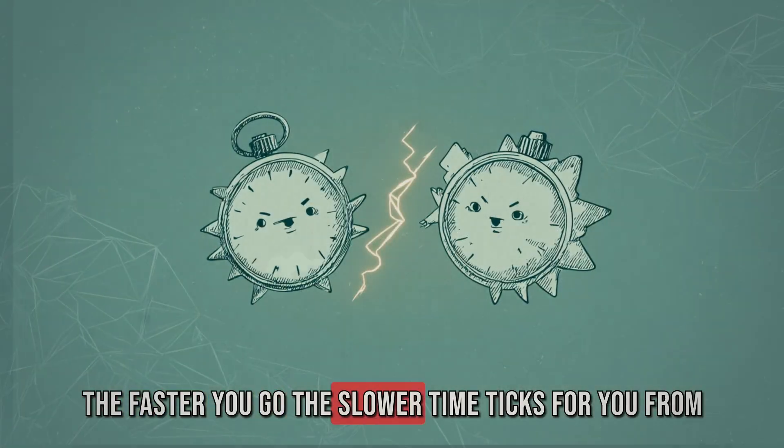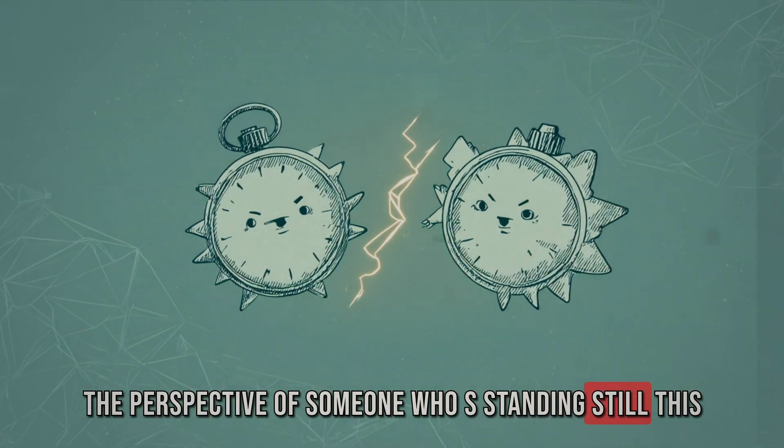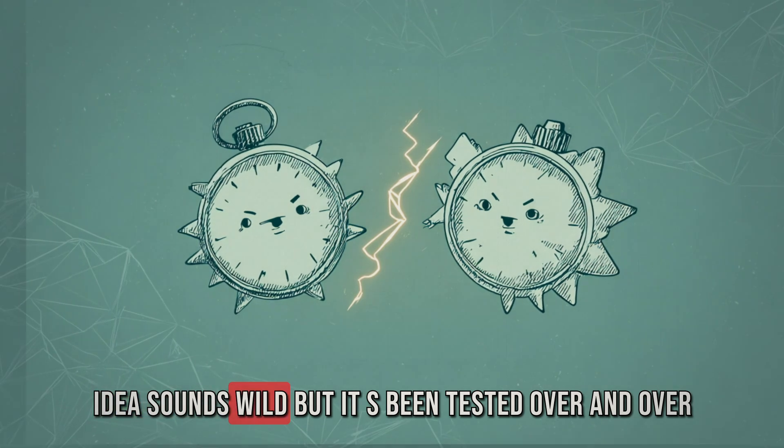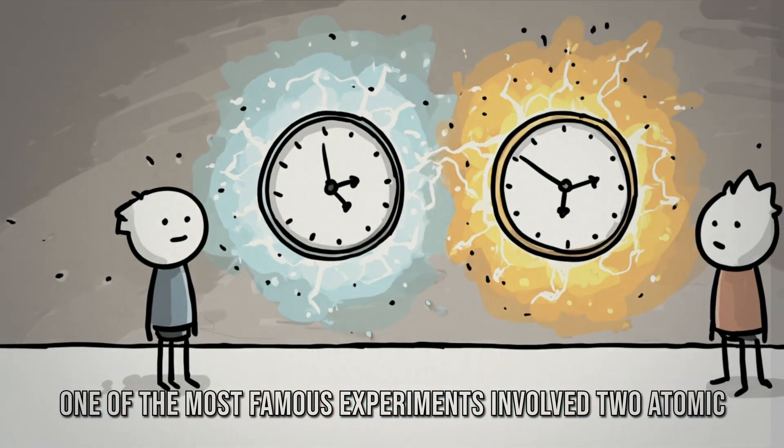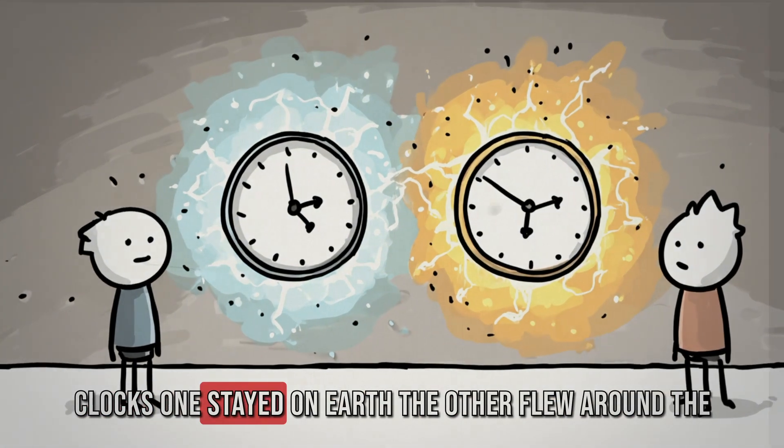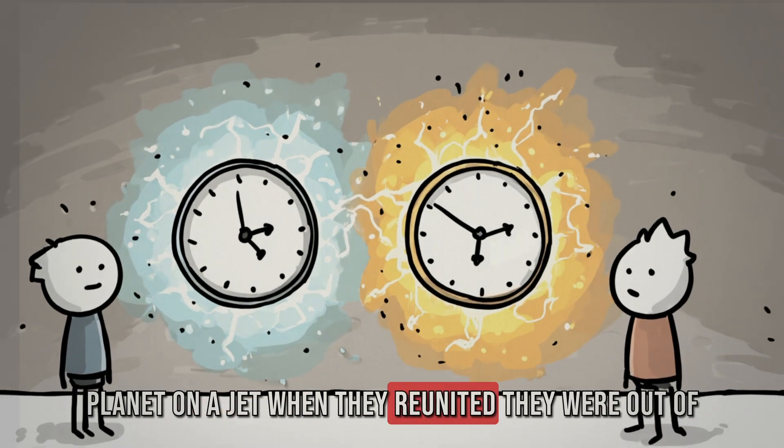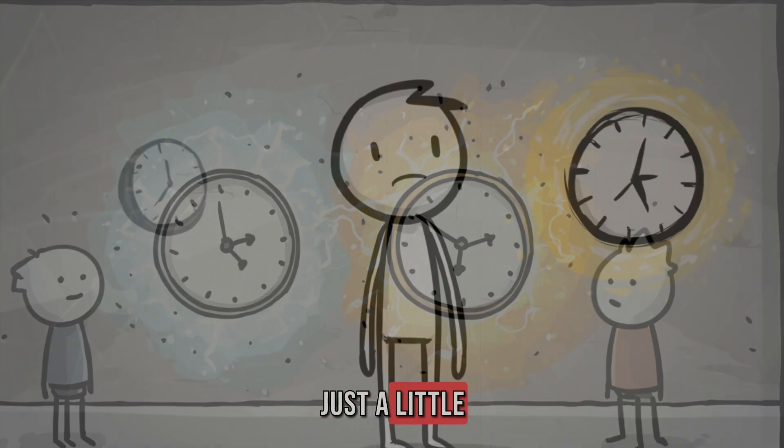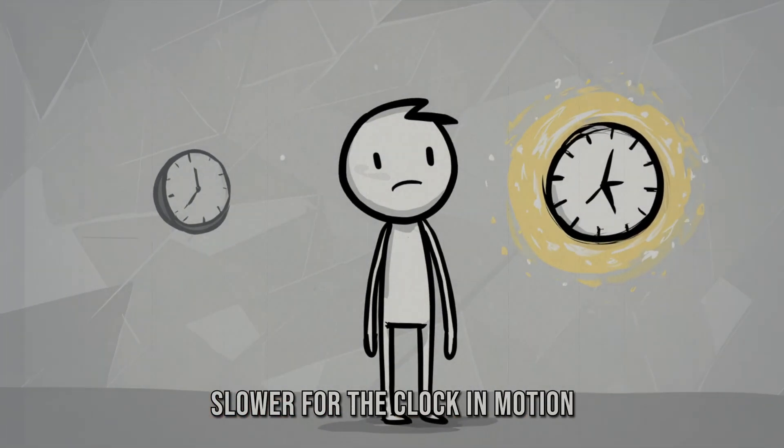The faster you go, the slower time ticks for you. From the perspective of someone who's standing still, this idea sounds wild, but it's been tested over and over again. One of the most famous experiments involved two atomic clocks. One stayed on Earth, the other flew around the planet on a jet. When they reunited, they were out of sync. Just a little.